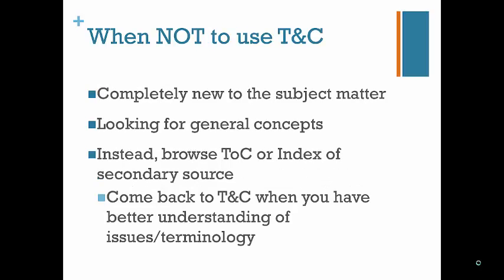In contrast, I do not like to use Terms and Connectors searching when I do not know a lot about the subject matter, because I may not know the terms of art in that particular area. Additionally, general concepts tend to be difficult to research with Terms and Connectors because you will likely receive entirely too many results. For example, searching for trespass in Colorado will return many results, many of which won't be useful. Instead, I find it more helpful to track down a secondary source, browse the table of contents or index, and read up on the topic. Once you have some background information, return to Terms and Connectors searching when you have a narrower issue, more familiarity with the subject, and a better sense of the terms used in that practice area.